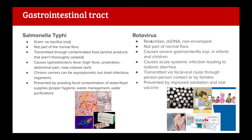Rotavirus is the biggest cause of diarrhea worldwide, especially in children and infants. It's not part of normal flora - it's a reovirus, dsDNA, non-enveloped. It causes acute systemic infection leading to isotonic diarrhea and kills many children every year. Transmitted via fecal-oral route through person-to-person contact or fomites - in nurseries one infected child can contaminate a toy and infect others. Prevented by improved sanitation and oral vaccines. Rotavirus is uncommon in more developed countries due to vaccination.